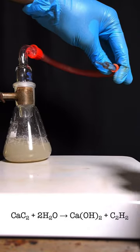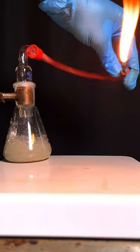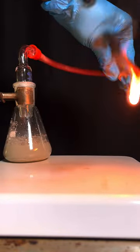Acetylene is flammable and burns with a yellow flame, producing lots of carbon, just like other aliphatic hydrocarbons.